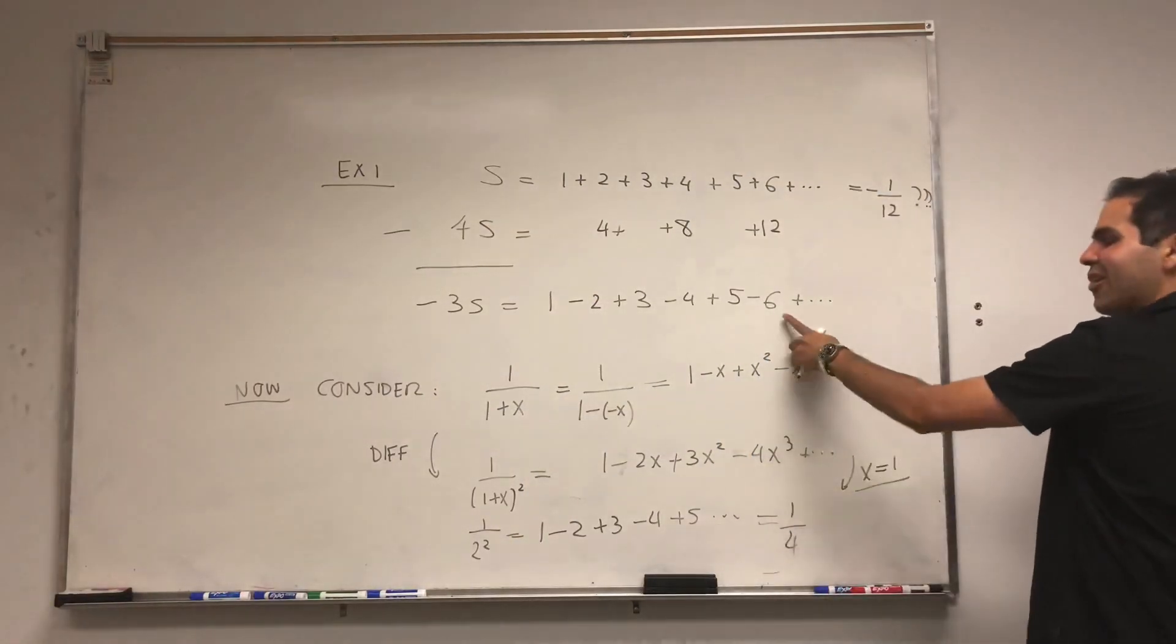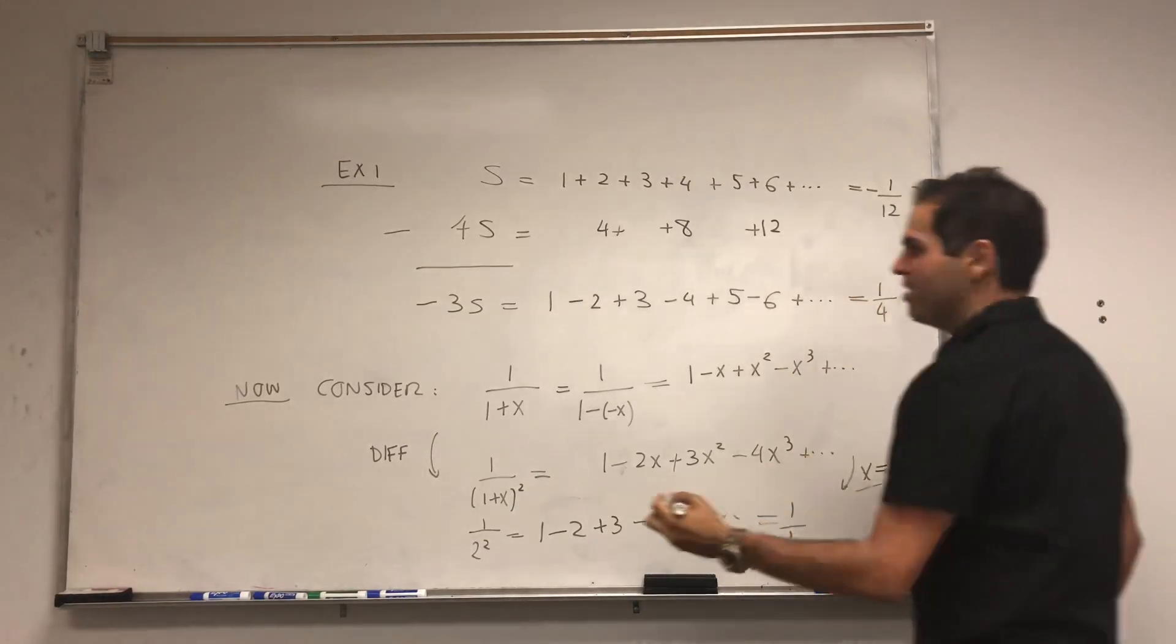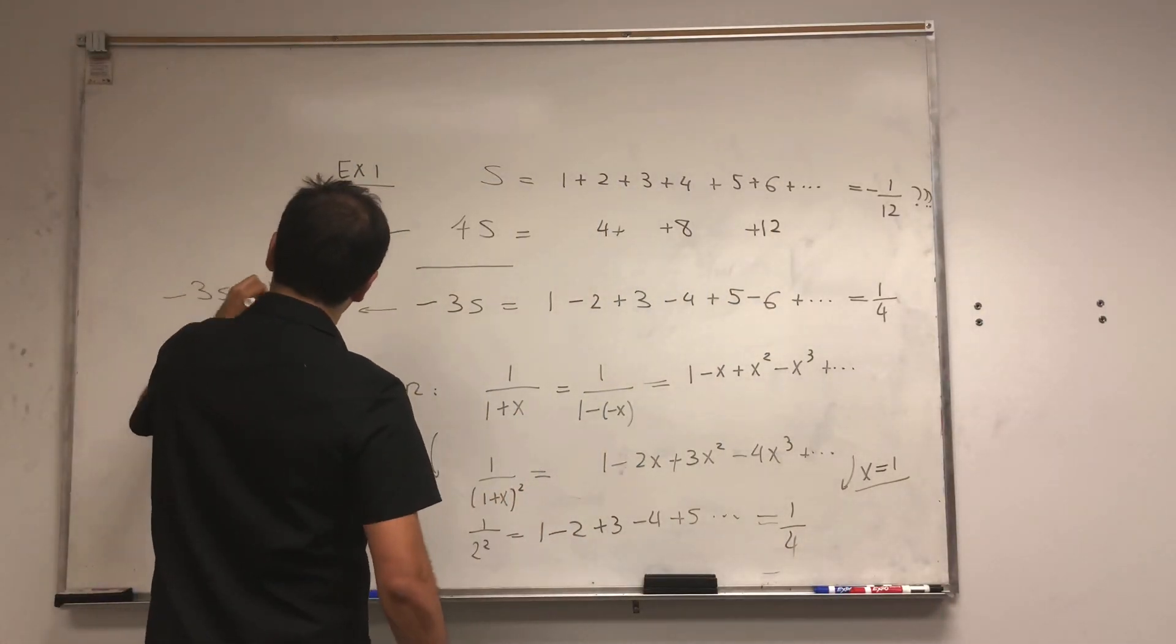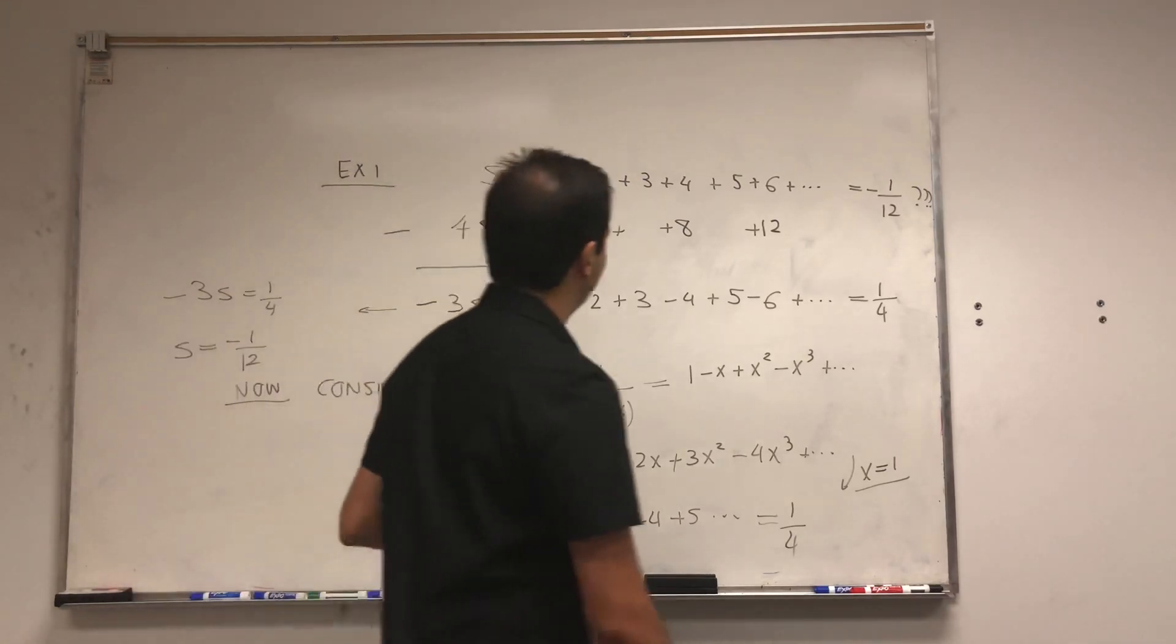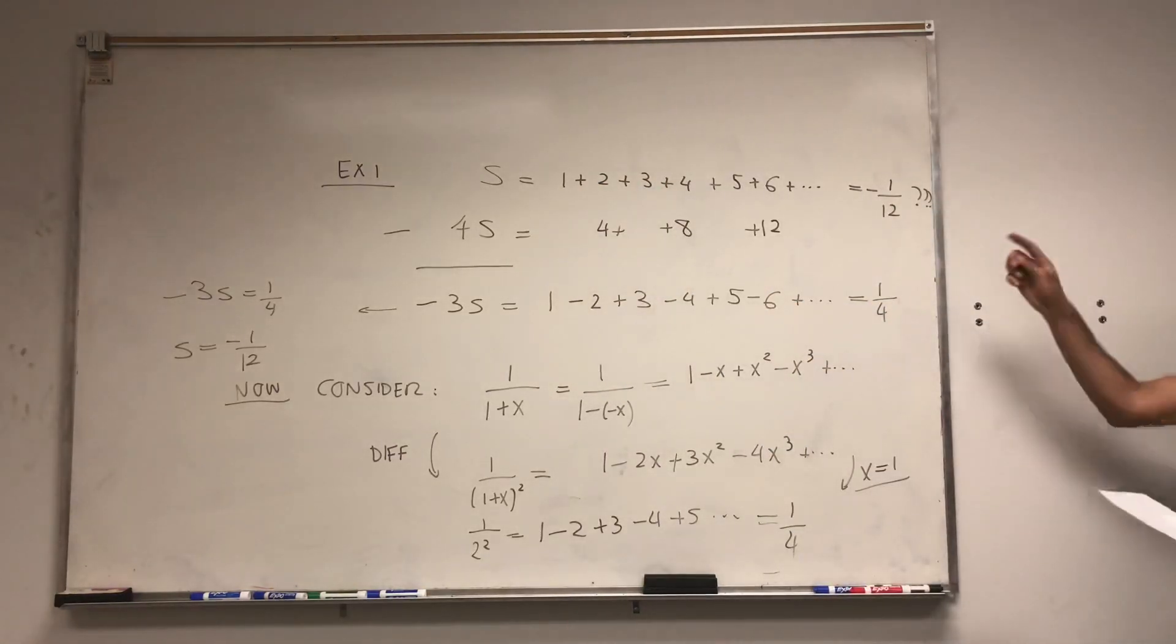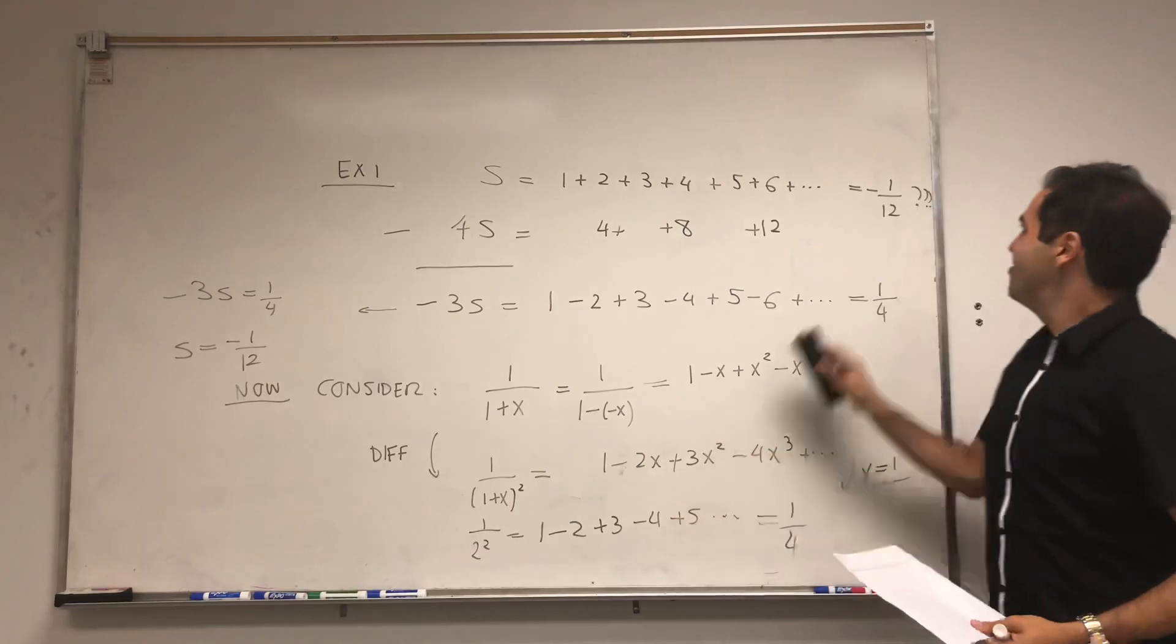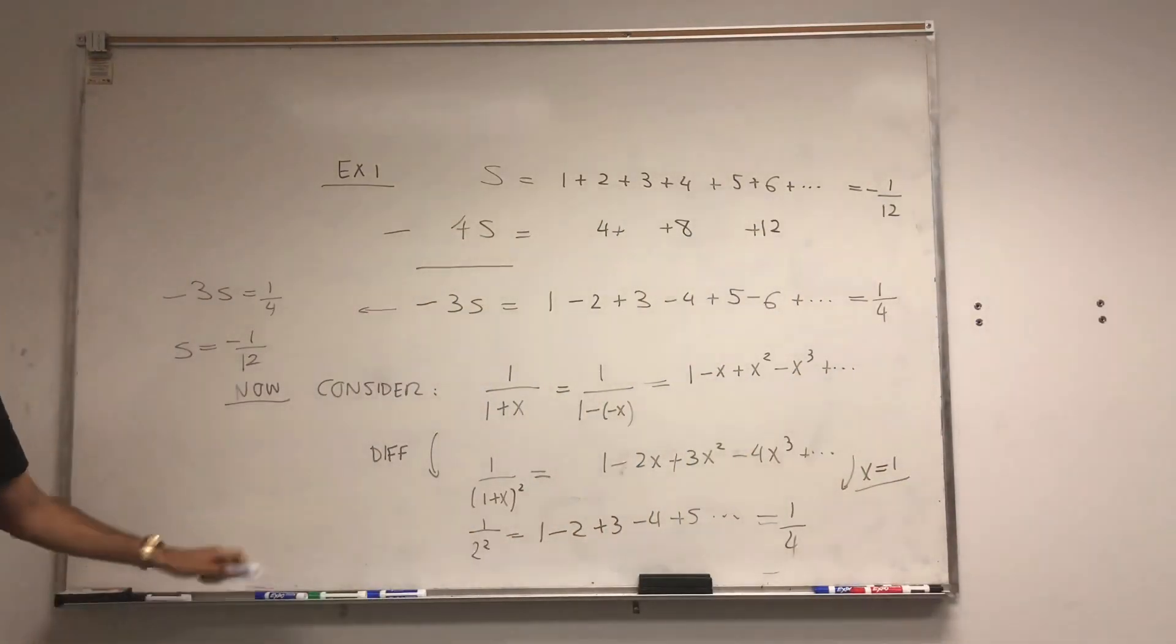So going back to our original problem, minus 3S is 1 quarter. So if you divide by minus 3, you get S equals to minus 1 over 12. In other words, our original series, 1 plus 2 plus 3 plus 4, etc., is minus 1 over 12. So your meme, the meme prophet in you is satisfied. Your inner meme is satisfied. But of course, mathematically, this is just ridiculous.